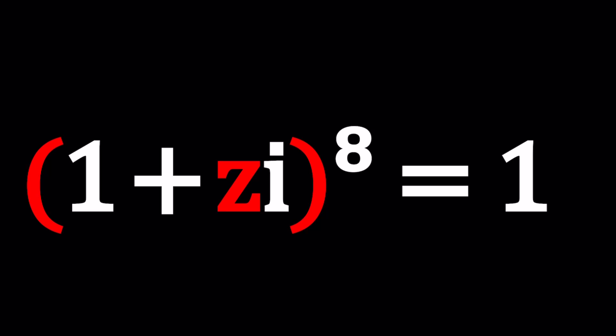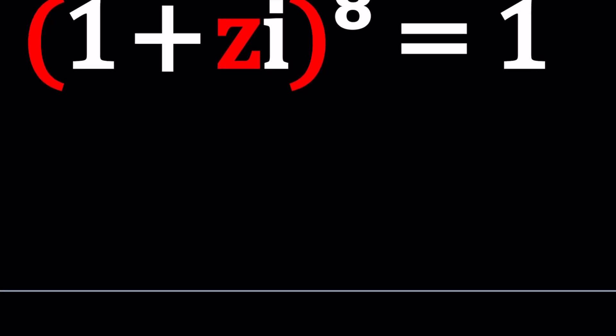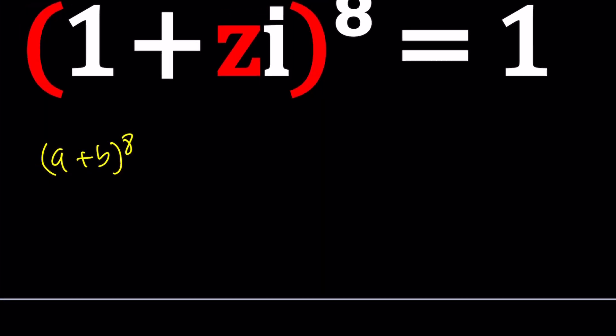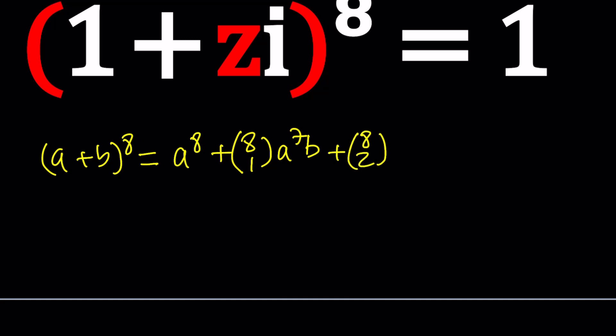First, we're going to look at the binomial theorem. It tells us that if you raise (A + B) to the 8th power, you get terms like this. The first term is A to the 8th. Then using binomial coefficients from Pascal's triangle, the powers of A start at the highest and decrease as the powers of B are introduced — always summing to 8. There are 9 terms total. Pascal's triangle gives us the 8th row as the binomial coefficients. The next term is 8-choose-2 times A^6 times B^2.